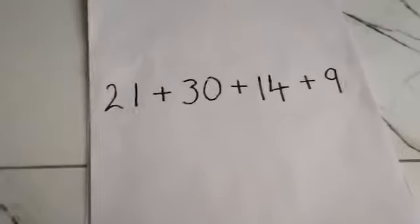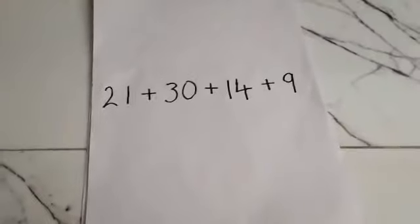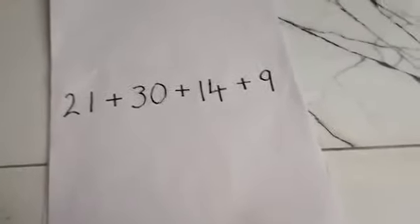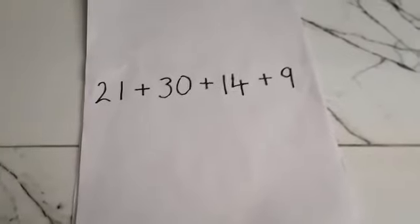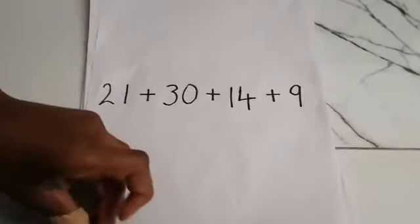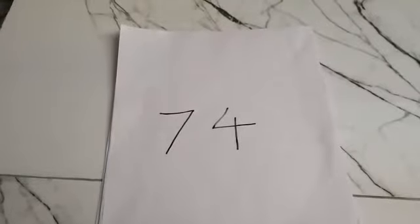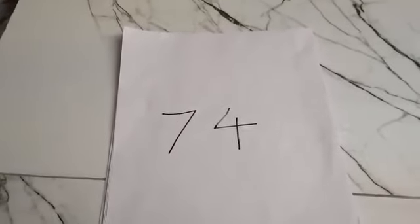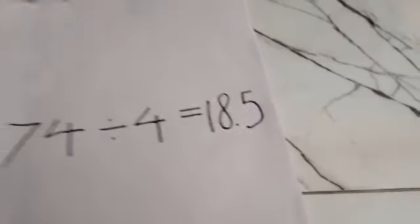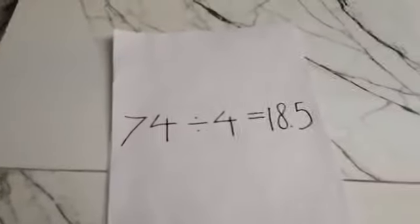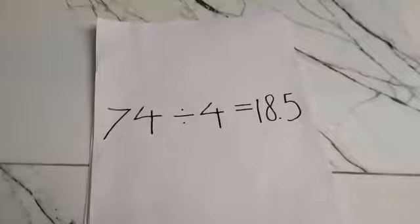Next up, add 21, 30, 14, and 9, and that gives you a total of 74. There are 4 numbers, so 74 divided by 4 gets you 18.5. So that's your answer.